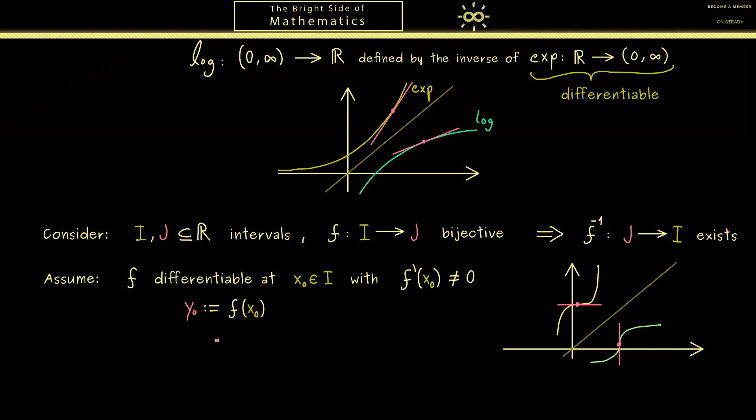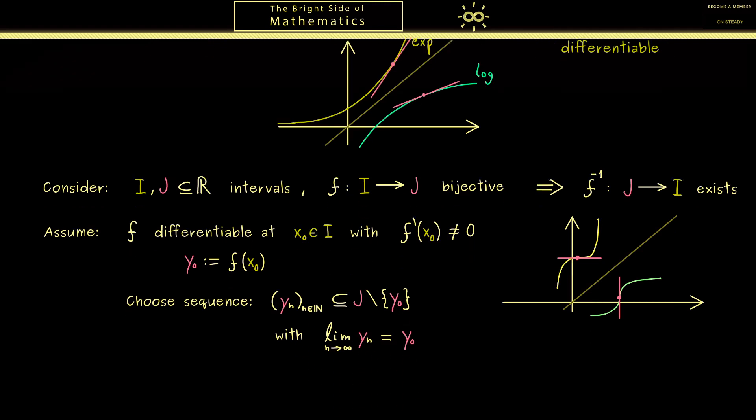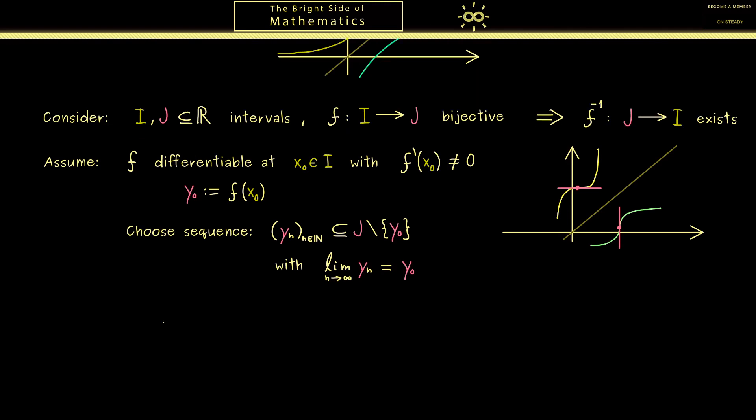Now we are interested in the differential quotient for the inverse function which is given by a limit, which can be calculated with sequences. So we take a sequence yn in J where we exclude y0. However as always it should be convergent to this point. And for the sequence we look at the difference quotient. So we have f inverse of yn minus f inverse of y0 divided by yn minus y0. Then when we send n to infinity we get the derivative of f inverse at the point y0.